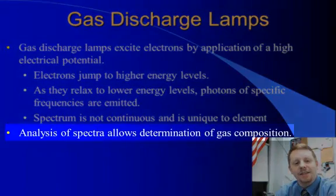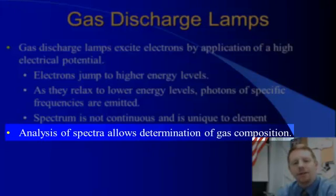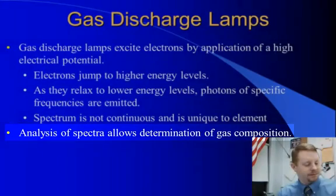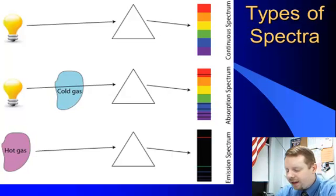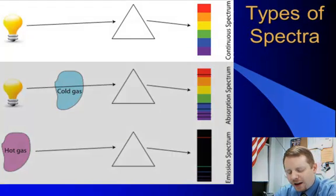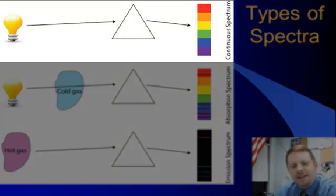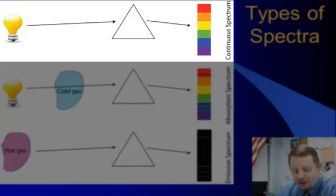The analysis of these spectra allows the determination of what the gas is made of. As an example, if we look at the top here, we're showing incandescence—blackbody radiation. An Edison-type light bulb emits all colors. It's broken up by a prism, and what you see on the other side is the ROY-GBIV: red, orange, yellow, green, blue, indigo, violet, and everything in between—all the colors of the rainbow.